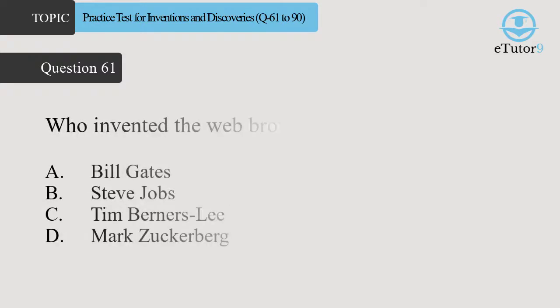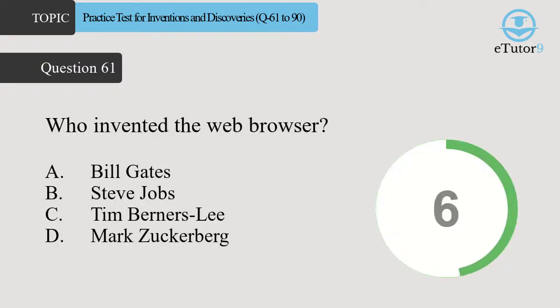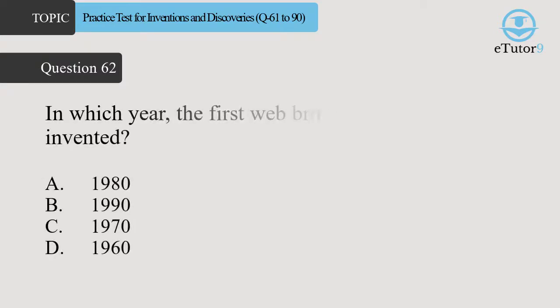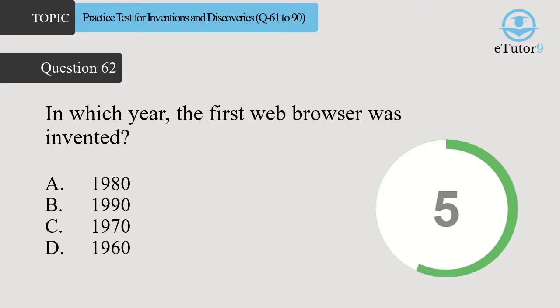Question 61. Who invented the web browser? Answer is C. Tim Berners-Lee. Question 62. In which year, the first web browser was invented? Answer is B. 1990.